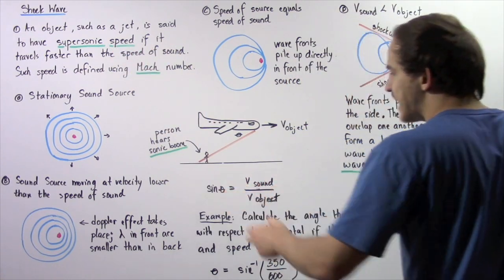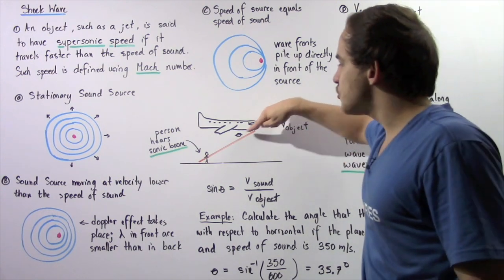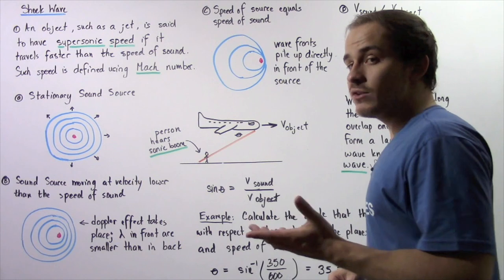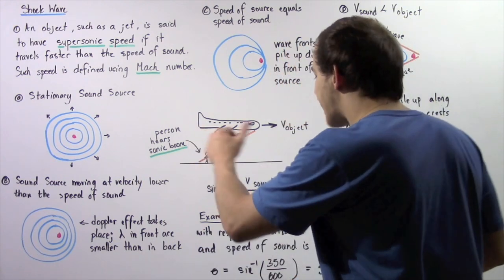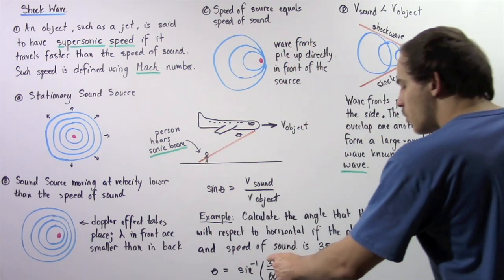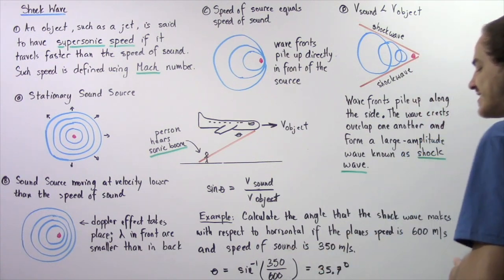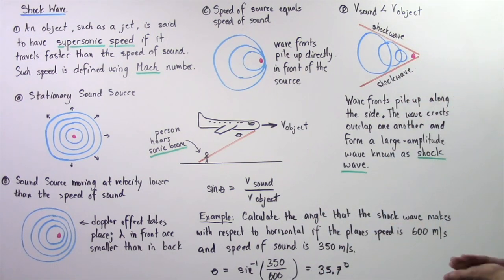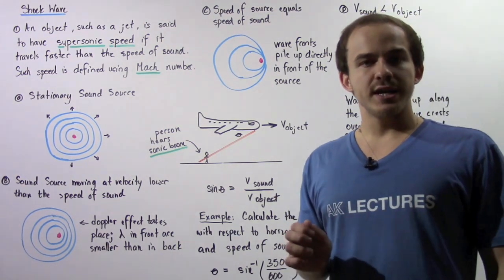we can use this equation to calculate the angle that the shock wave makes. So the angle is equal to the inverse of the sine function of the ratio of 350 to 600. Notice the meters per second cancel and we're left with an angle of 35.7 degrees.